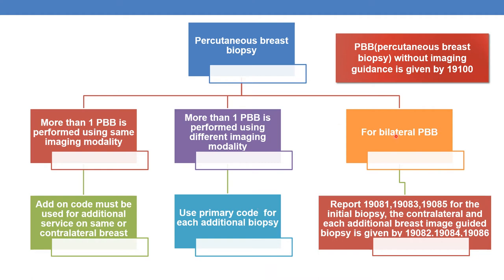To report bilateral percutaneous breast biopsy: first report 19081, 19083, or 19085 for the initial biopsy. Then the contralateral and each additional breast image guided biopsy is reported using add-on codes 19082, 19084, and 19086. Percutaneous breast biopsy without imaging guidance is given by code 19100.